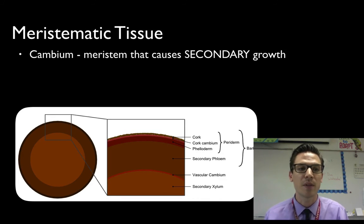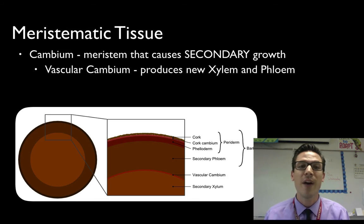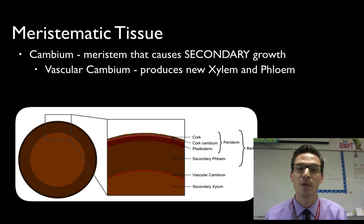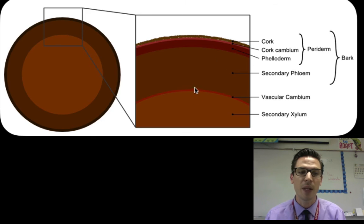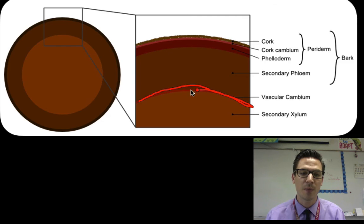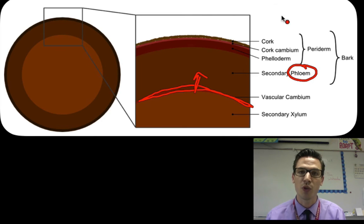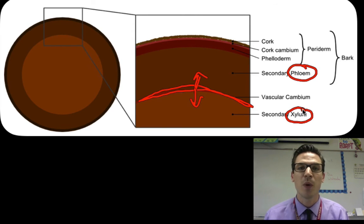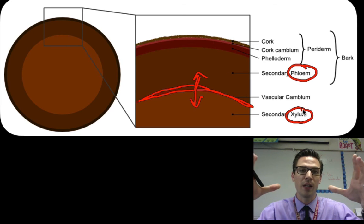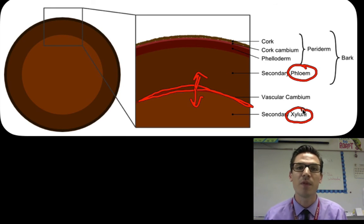Cambium are meristem cells that cause secondary growth — making the plant wider — found in the roots and stems. There are two types of cambium. The first is vascular cambium, which produces new vascular tissues like xylem and phloem. Looking at a cross-section of a stem, these meristem cells divide: some push outward producing more phloem to transport sugars, and others divide inward producing new xylem to transport water upward. This pushes the stem or root to become thicker and thicker — a type of secondary growth.